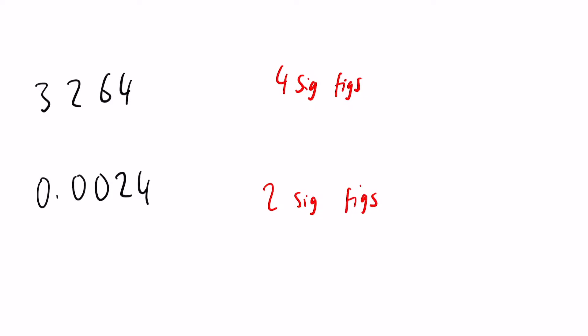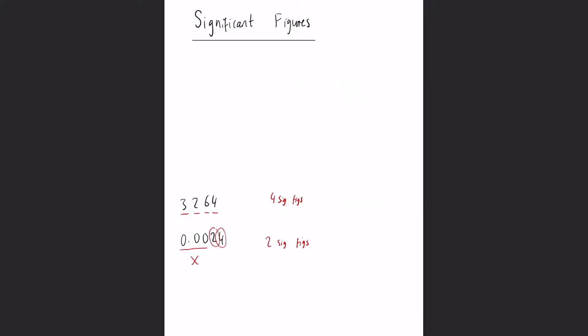The thing that indicates a significant figure is just a number that adds value to the number. When it comes to decimals, these zeros do not count as significant figures, it's only the two and the four. Numbers greater than one are much easier to understand, so we will look at an example of that first.